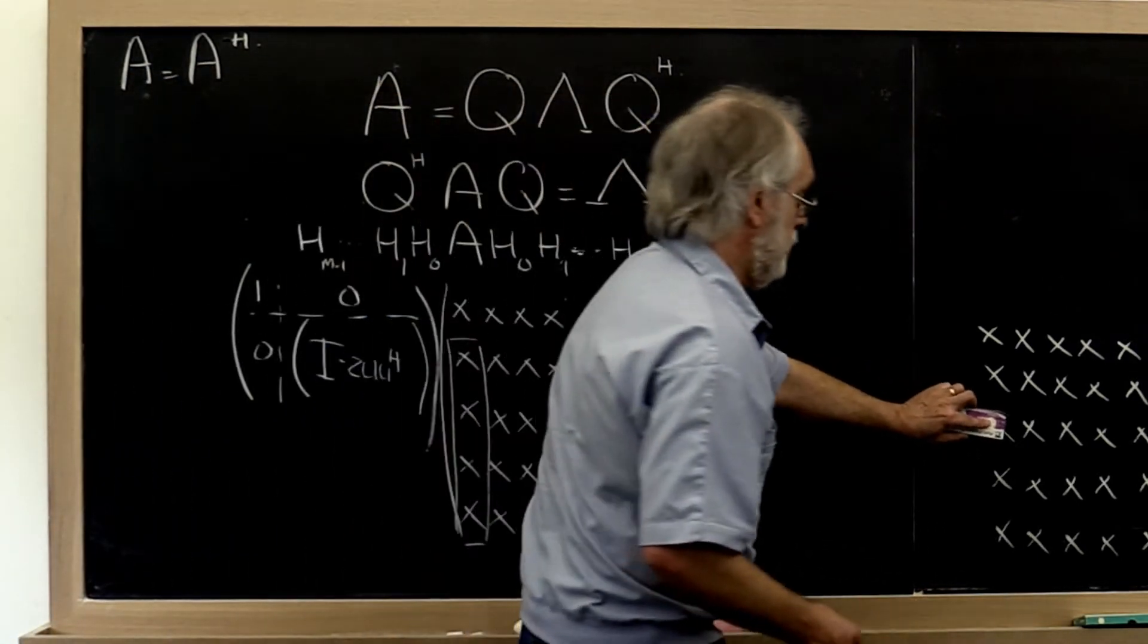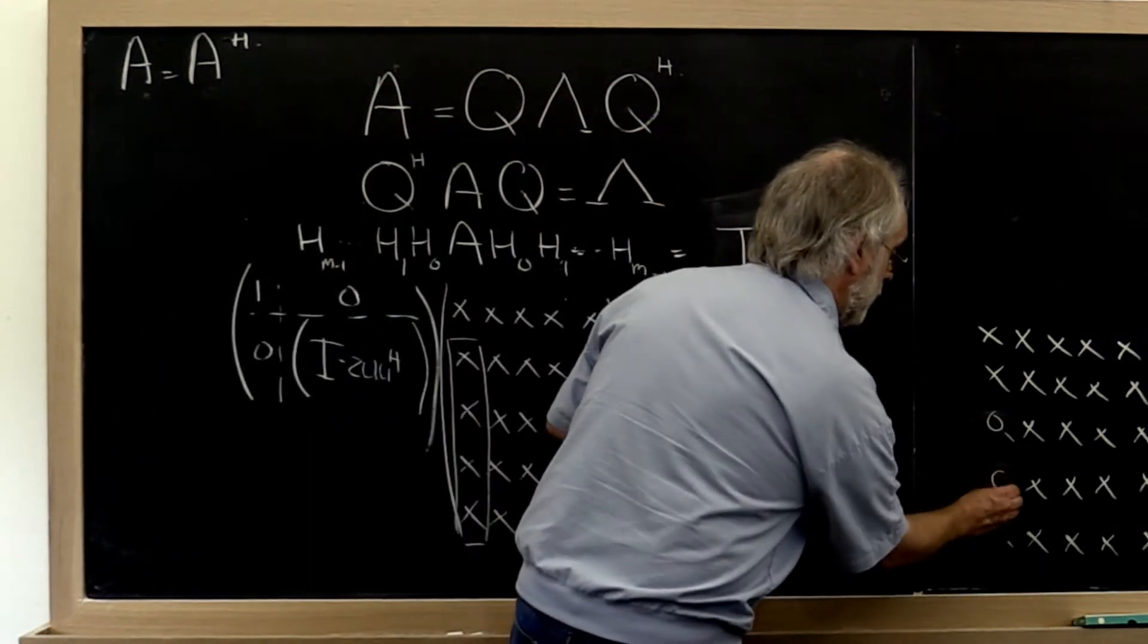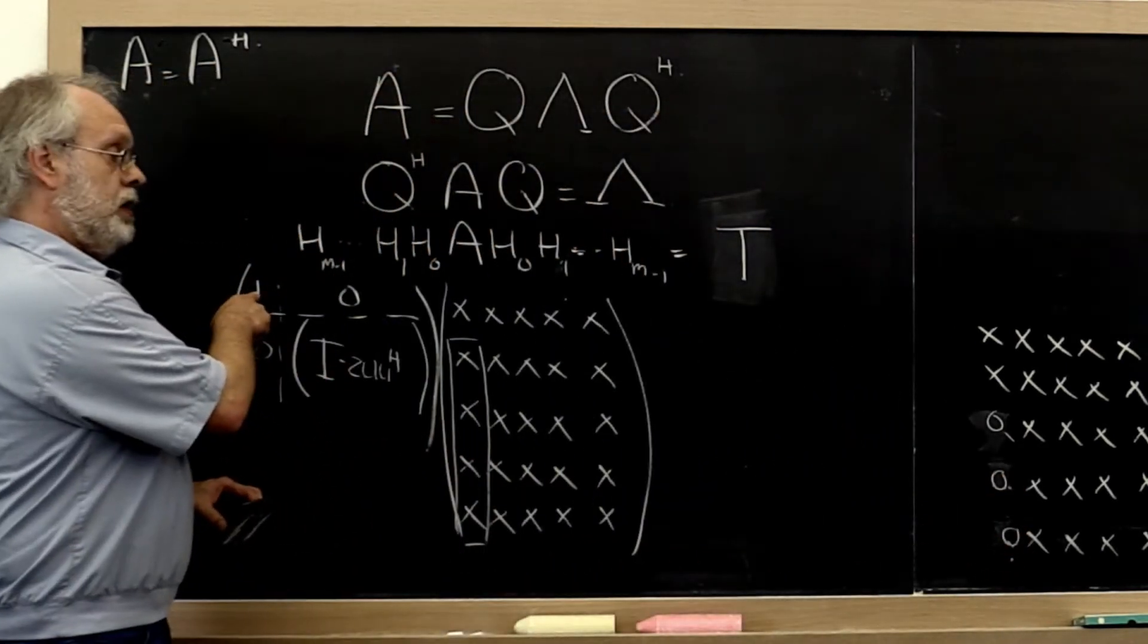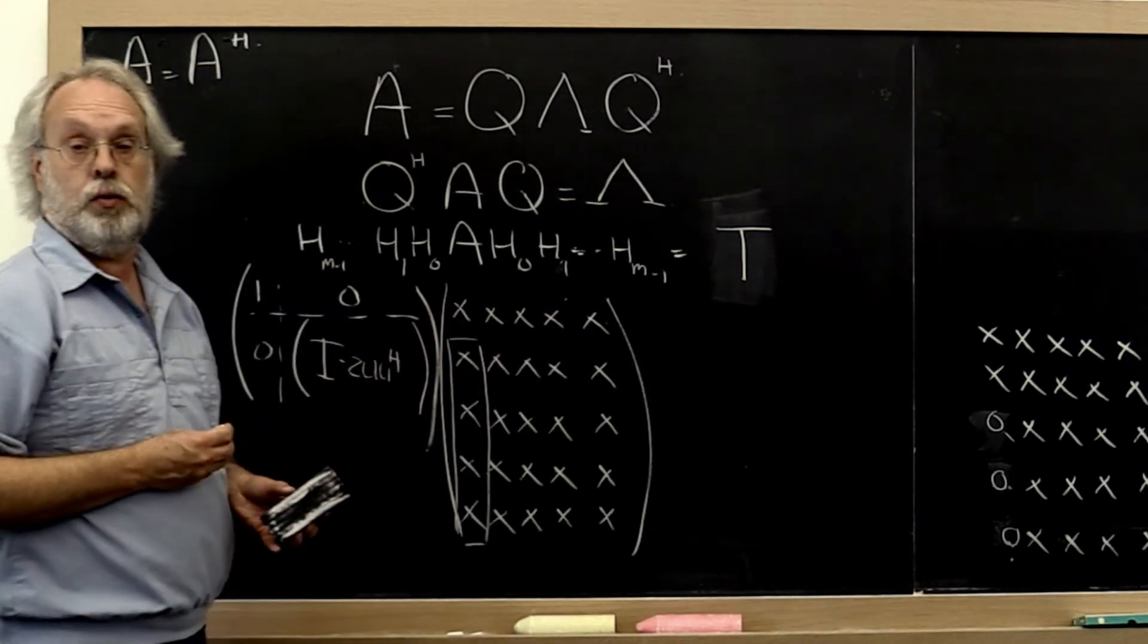And let's put those zeros over here. The fact that we put this 1 here just says leave the first row alone.